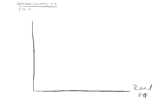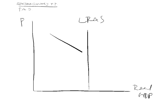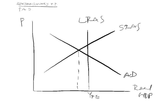On the graph, the axes are real GDP and price level. We have the long-run aggregate supply, aggregate demand, short-run aggregate supply, potential output, and our current output Y1. We are in a recessionary gap — the economy is in a recession.